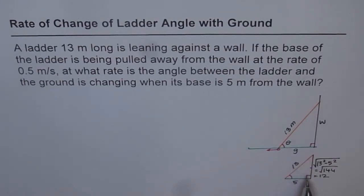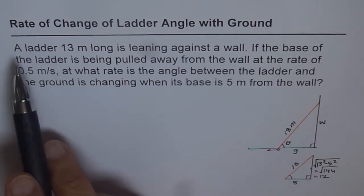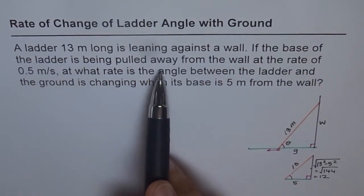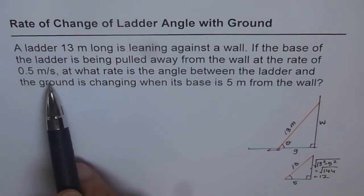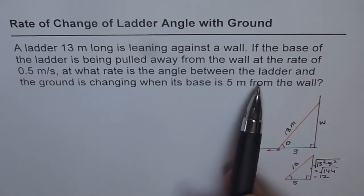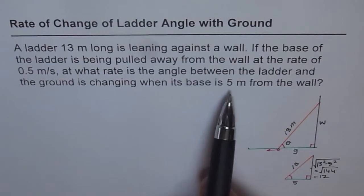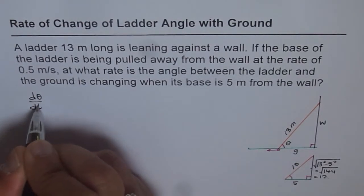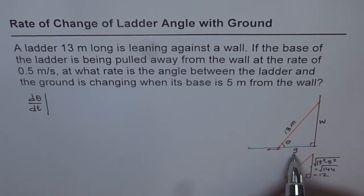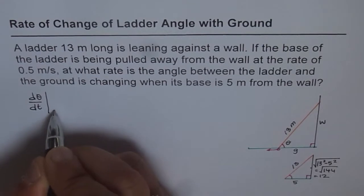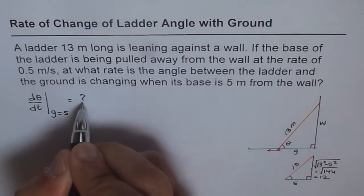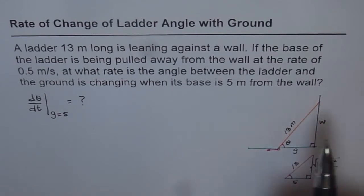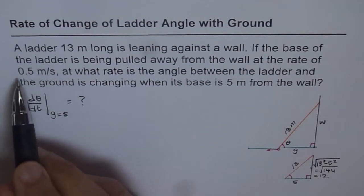Let's solve this question. A ladder 13 meters long is leaning against a wall. If the base is being pulled away from the wall at the rate of 0.5 meters per second, at what rate is the angle between the ladder and the ground changing when its base is 5 meters from the wall? We need to find dθ/dt when g = 5. The length of the ladder is 13 meters and dg/dt = 0.5 meters per second.